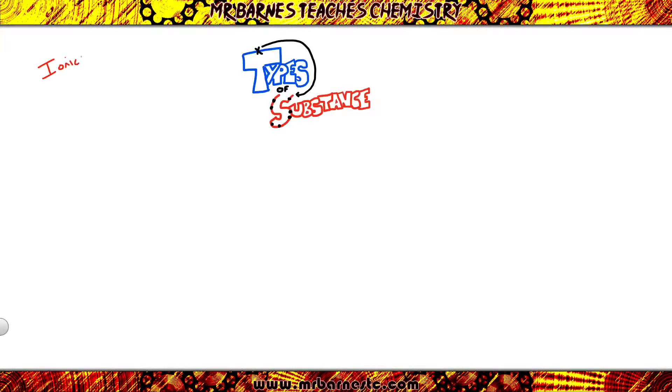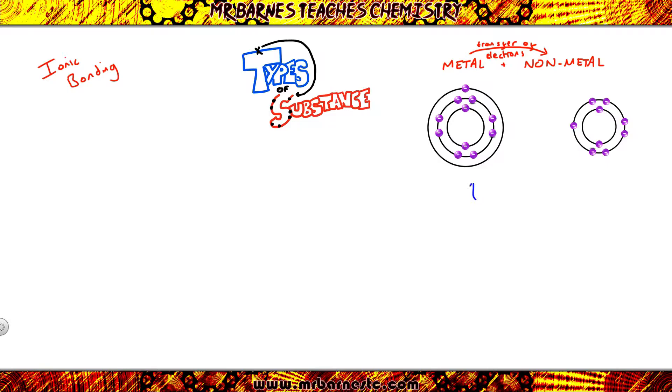The first thing to remember is that ionic bonding involves a metal and a non-metal, and the metal always will transfer electrons to a non-metal. For example, I've got a metal here which has one electron in the outer shell, which means it's in group one. It wants to lose that one electron, it's easier to lose it.